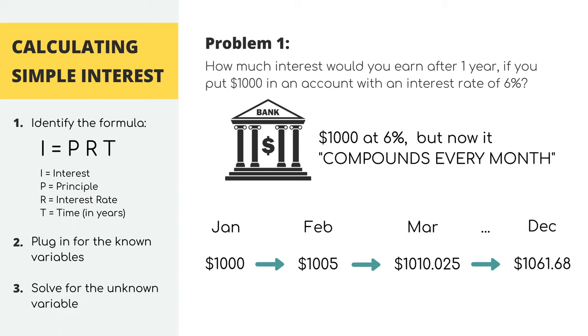If we keep compounding every month, by the end of the year in December, we're going to have $1,061 and 68 cents instead of just the $1,060 we got from simple interest. This amount seems small, but when we're talking about much bigger numbers like $10,000, $100,000 or even $1 million, it definitely adds up.